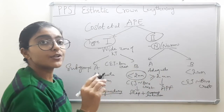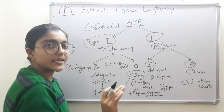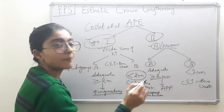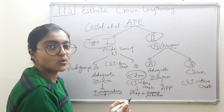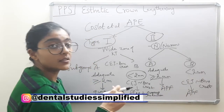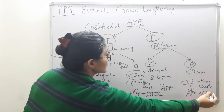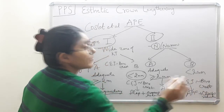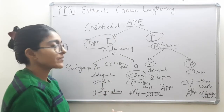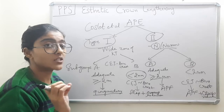For type 2, the decision on whether to do bone reduction depends on the subgroup. In type 2A, the distance between CEJ and bone is adequate so apical positioning flap alone will not encroach on the biological width. But in type 2B, where that distance is inadequate, we must perform apical positioning flap plus osseous reduction to provide space for proper biological width establishment.